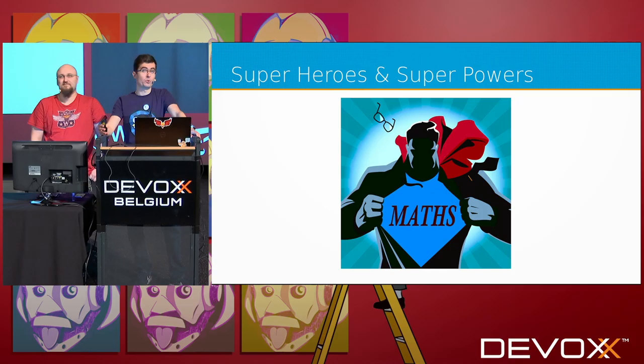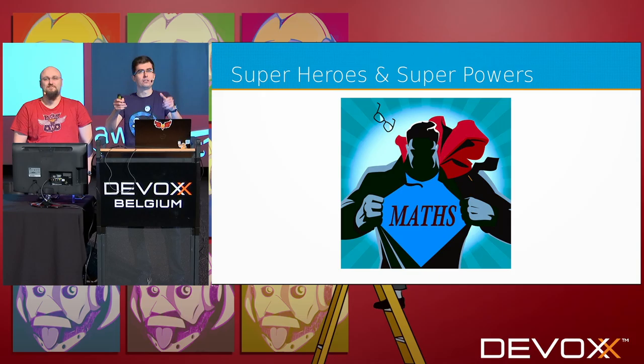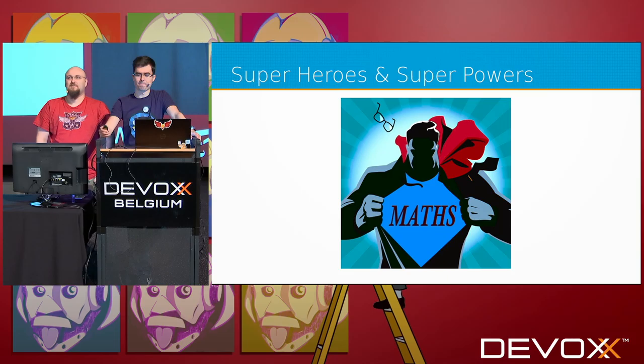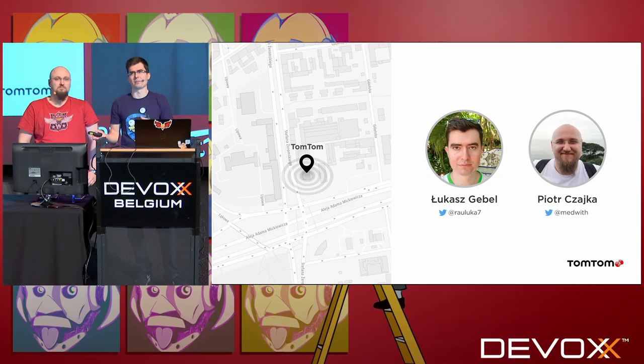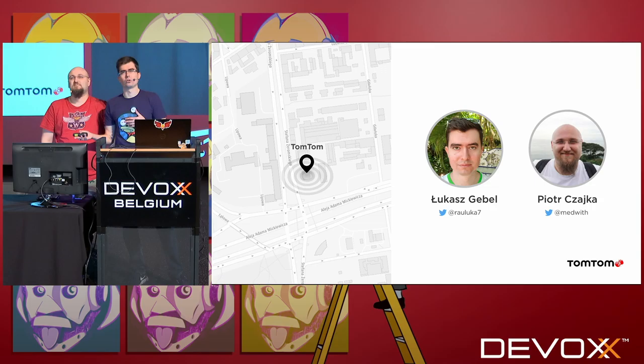Why superheroes and superpowers? Because we think that machine learning is a kind of superpower in the computer science world, and every superpower has some origins. In the case of machine learning, those origins lie in math. My name is Lukasz Gebel, and that's my friend Pietrz Czajka. We are both software engineers at TomTom, coming from Wrocław in Poland, where we work in the location and navigation services department.